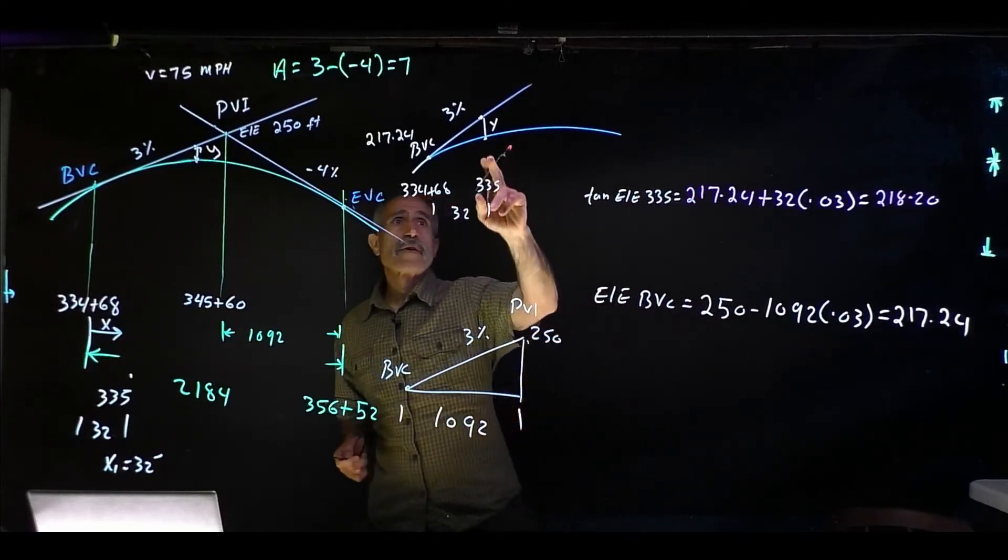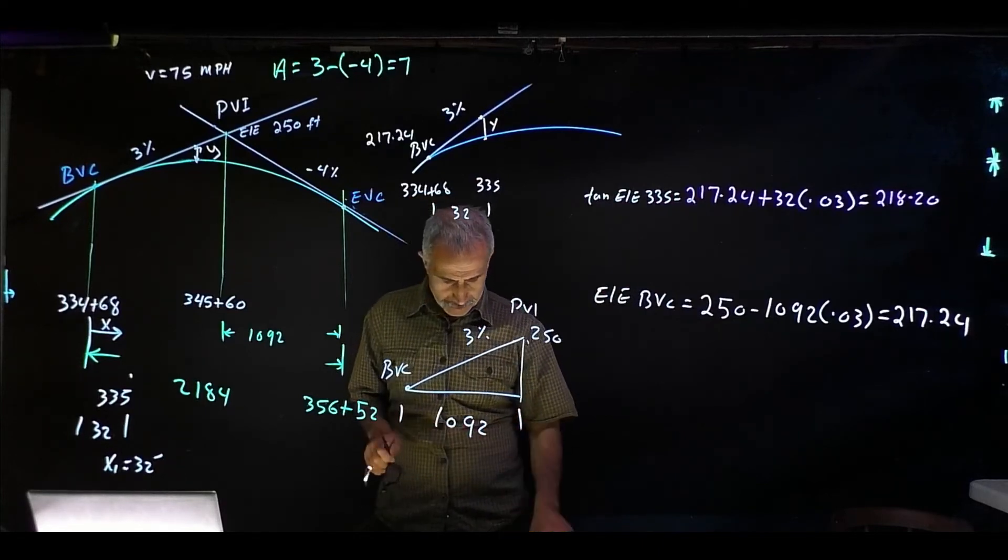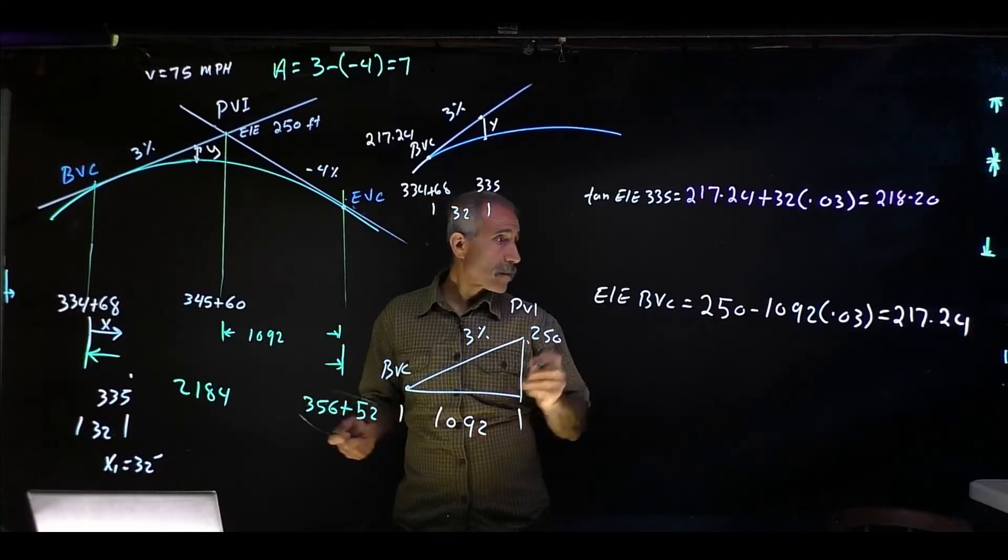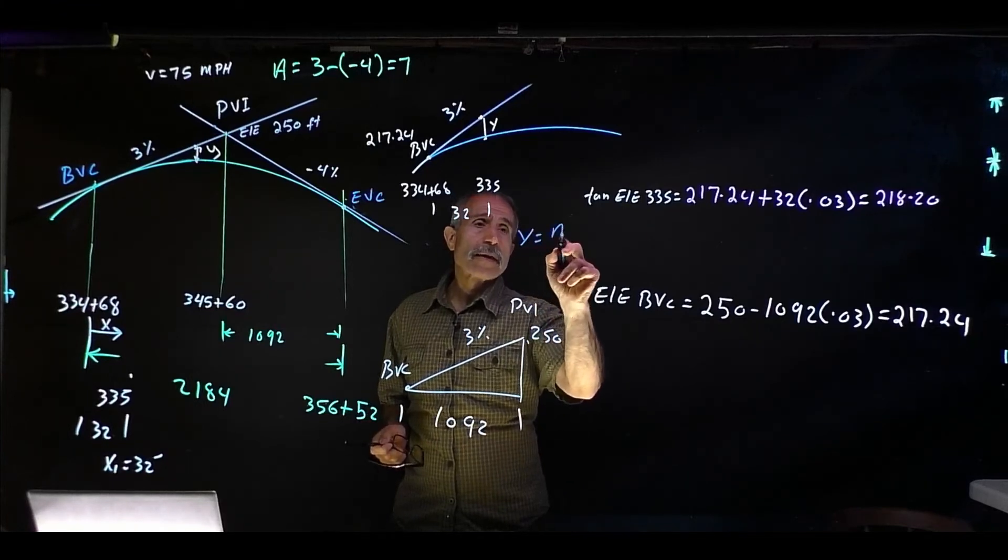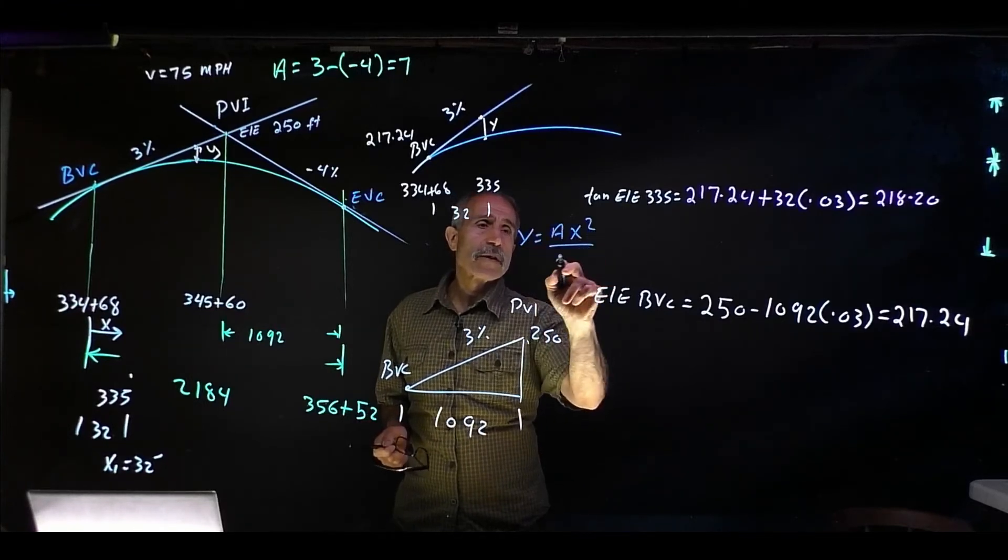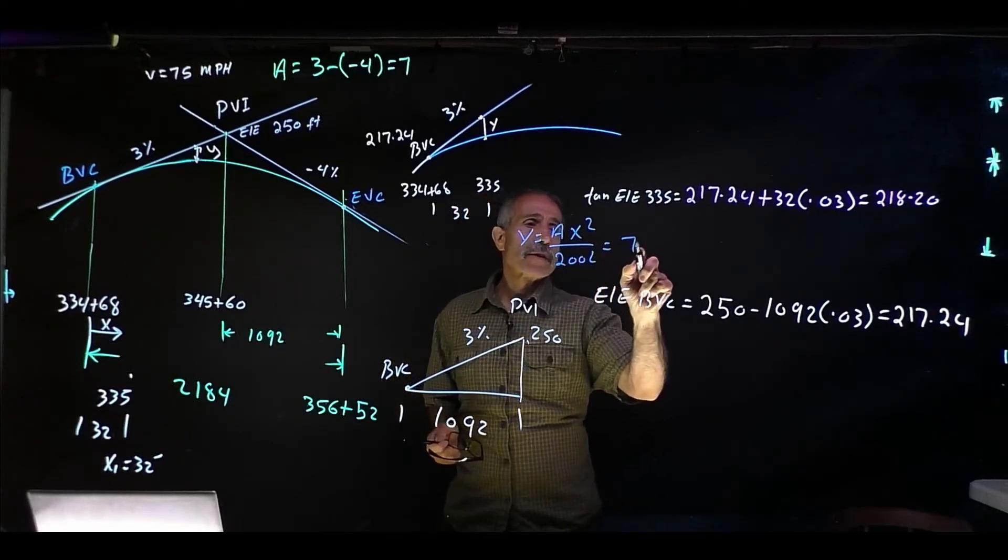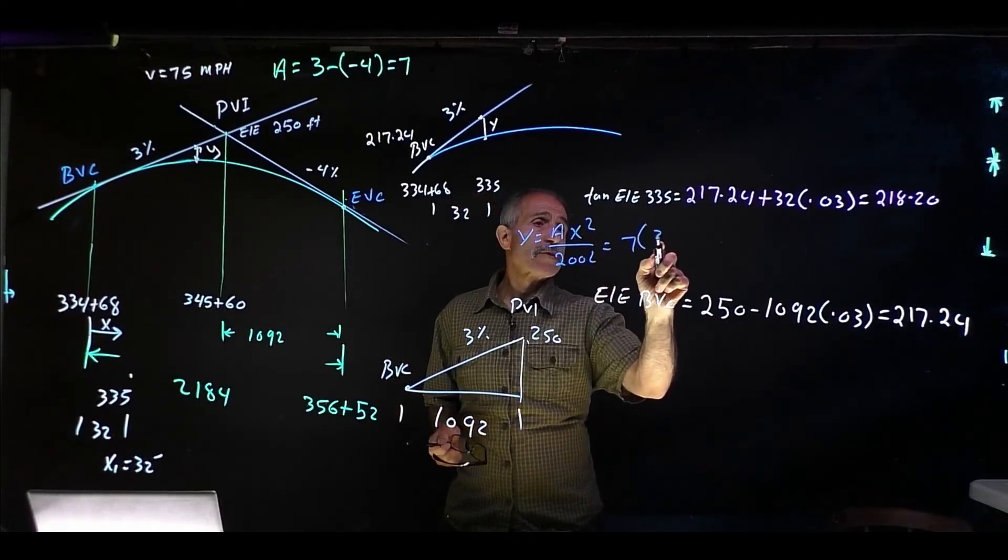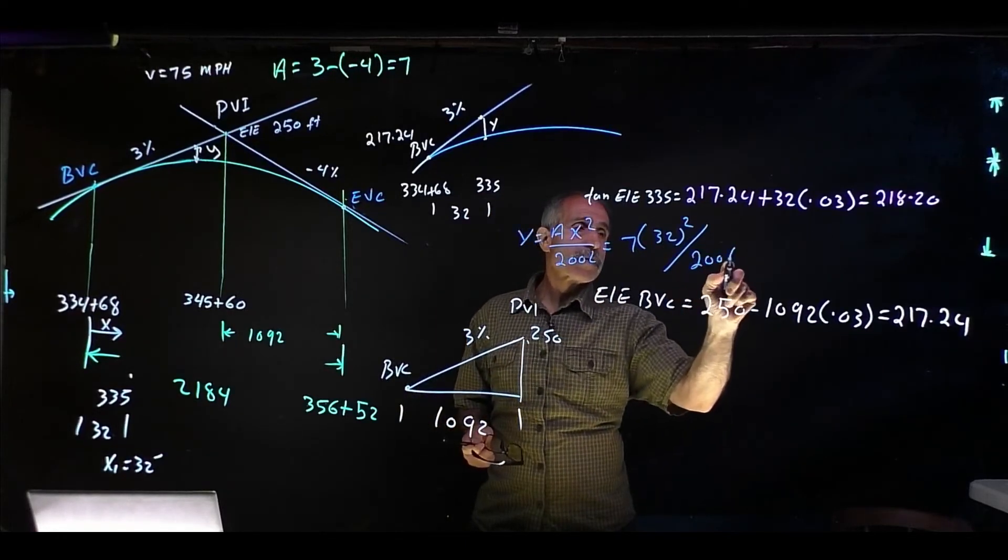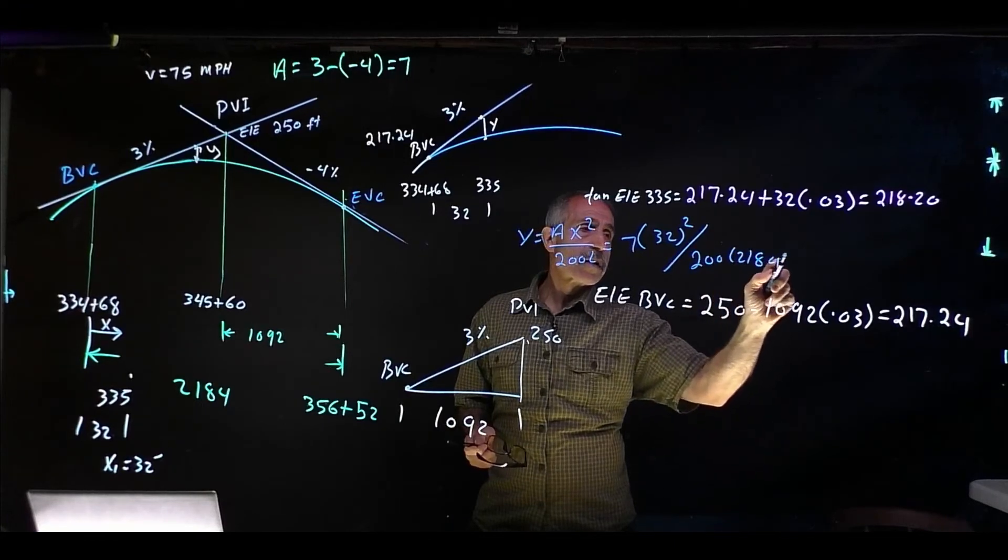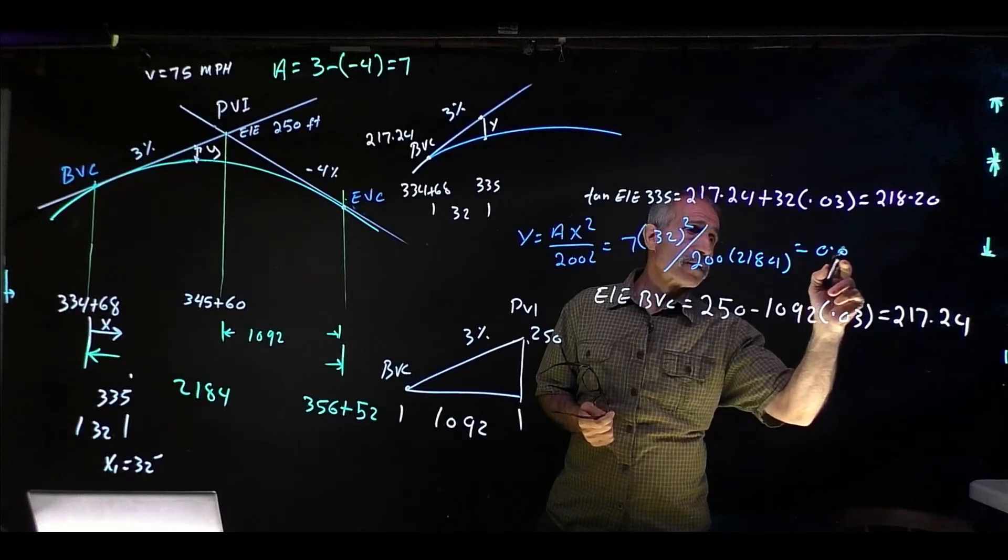The next thing we're going to find out, I want to know what y is. y equals A times x squared divided by 200L, so A becomes 7, my x is 32 squared, and divide that whole thing by 200 times 2184.